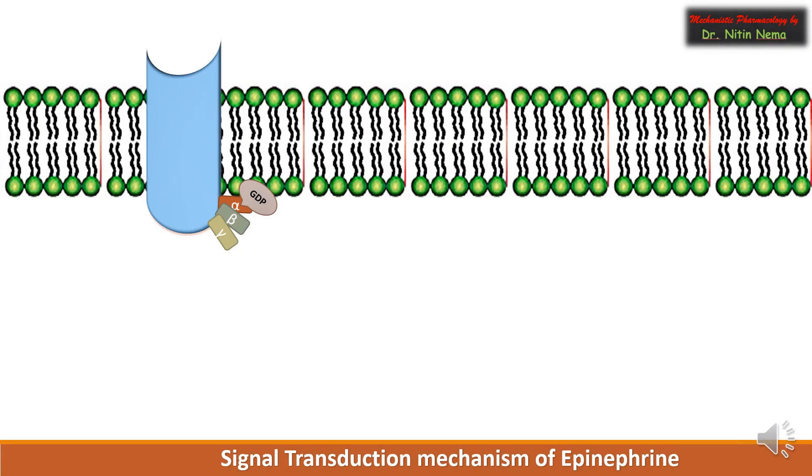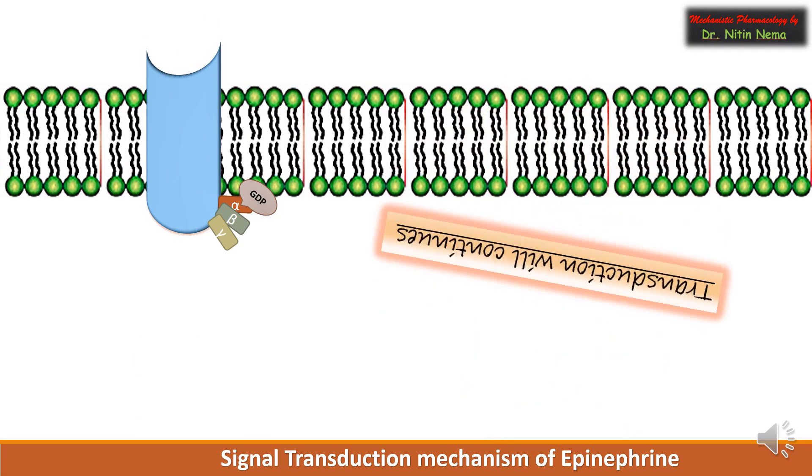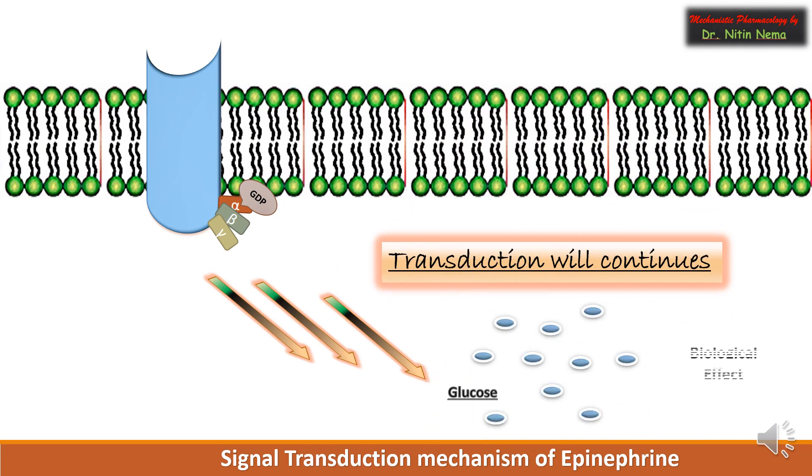Thus transduction will continue and formation of glucose occurs to release more and more energy in surrounding cells. Ultimately, the fight and flight response of epinephrine is observed.